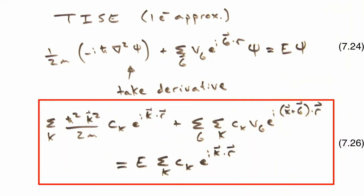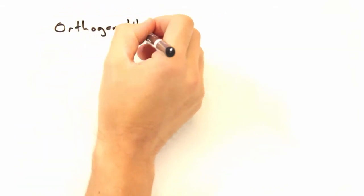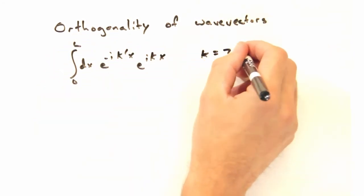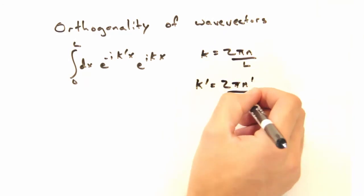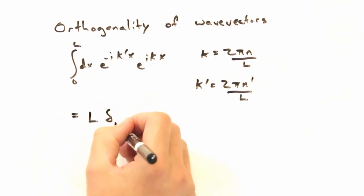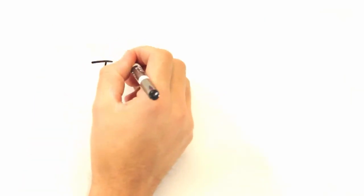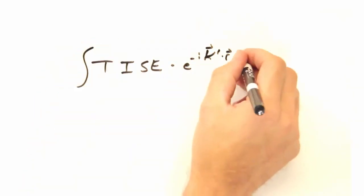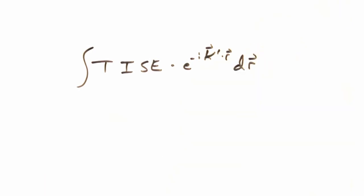After some derivatives, we end up with the following expression. Eric, that doesn't look much better, especially with all those sums. Luckily, we can take advantage of the orthogonality of our wave vectors. As an example, here's the integral of e to the i k prime x times e to the i kx, where k and k prime are different wave vectors. Only for k prime equals k do you get a non-zero value for this integral. We'll start this trick by multiplying our time-independent Schrodinger equation by e to the i k prime x. Then we'll integrate across dr.